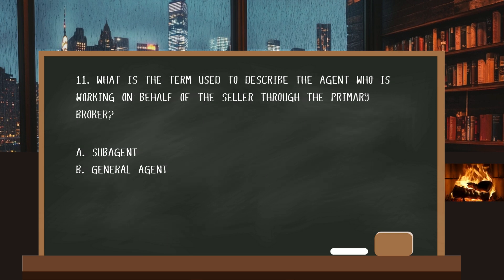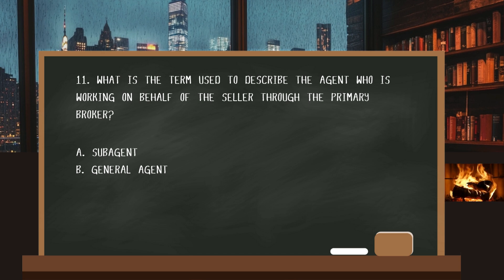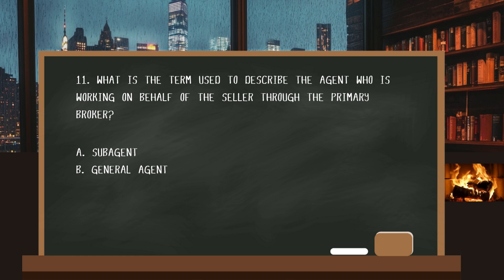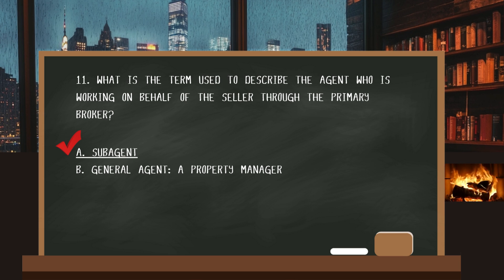Number eleven. What is the term used to describe the agent who is working on behalf of the seller through the primary broker? The answer: a sub-agent. A general agent is considered a property manager.